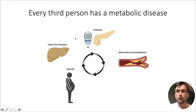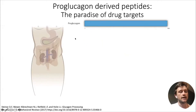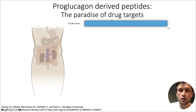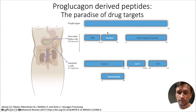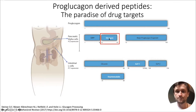Metabolic diseases include diabetes, atherosclerosis, dyslipidemia, and so forth. One of the exploding fields has been from the pro-glucagon-derived peptides — I call this the paradise of drug targets. Here we see the pro-glucagon precursor hormones. We just heard about GLP-1 and GLP-1 receptor agonists, but what I've been spending the last roughly 10 years on is glucagon. Let's see what glucagon can do.